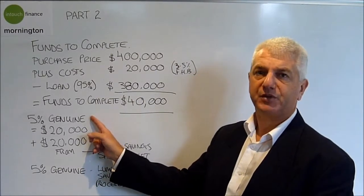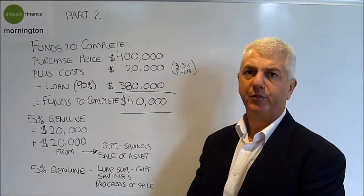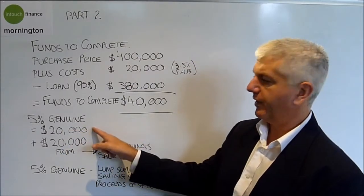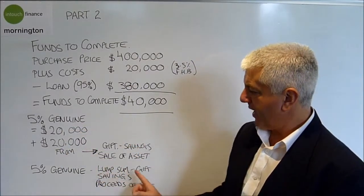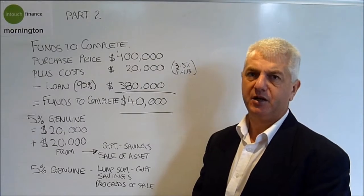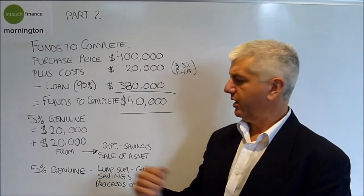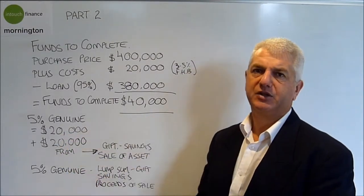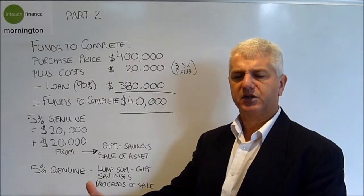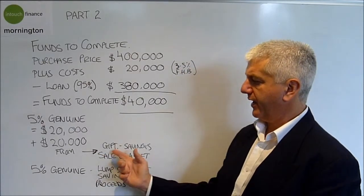The first amount is 5% genuine savings. Every lender wants to see 5% genuine savings as a minimum. Obviously if you have more savings, that's even better, but the minimum you need is 5%, so that's $20,000. Genuine savings can be a lump sum or a gift that's been in a bank account for 3 or 6 months depending on the lender. Most will accept 3 months. It can be savings over a period of time, whether you started at $19,000 and saved to $20,000 over 3 months, or started at $10,000 with consistent regular deposits of your income. That's genuine savings as well.